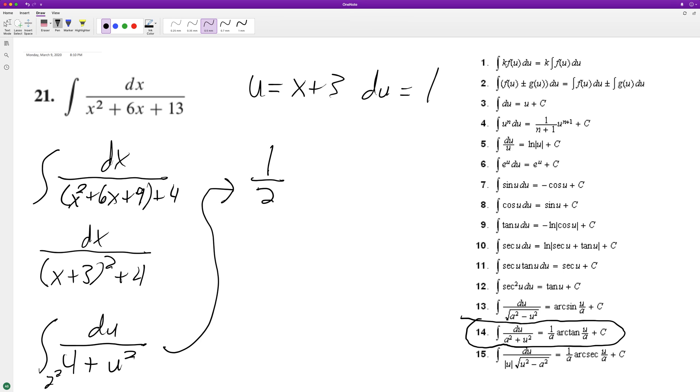So 1 over 2, arc tangent of u over a. So it's going to be - well, excuse me, I should put the u and then over a, in this case which is 2, plus c. So subbing back in...